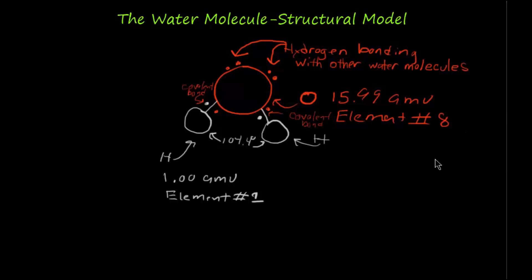As we take another look at the structural model of the water molecule created earlier, you recall that oxygen is the eighth element found in the periodic table of elements. Its relative location in the periodic table is further to the right of hydrogen, making it more electronegative than hydrogen and the other elements to the left of this position. So let's indicate oxygen's relative electronegativity by placing a negative sign here.